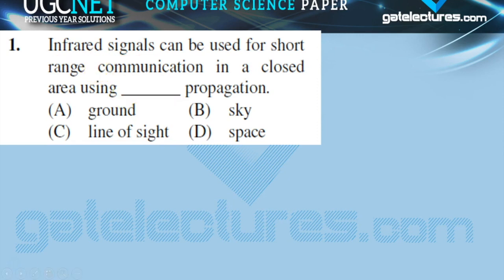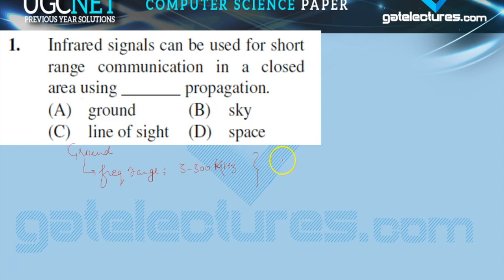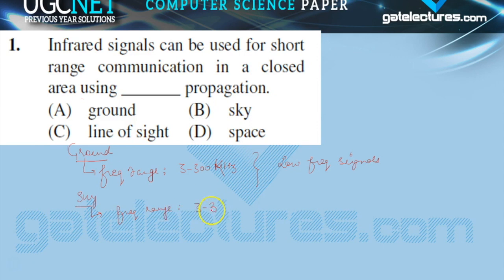For ground propagation, the frequency range is 3 to 300 kilohertz. This propagation method is used for low-frequency signals. For sky propagation, the frequency range is 3 to 300 megahertz. Signals that have medium-level frequency use sky propagation.